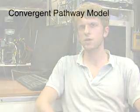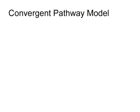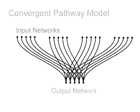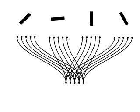To evaluate whether activity observed in vivo is really consistent with this hypothesis, we need to develop a quantitative understanding of how these mechanisms might work. We developed a simple computational model of a convergent pathway in which several input networks representing orientation variables converge to a single output network.